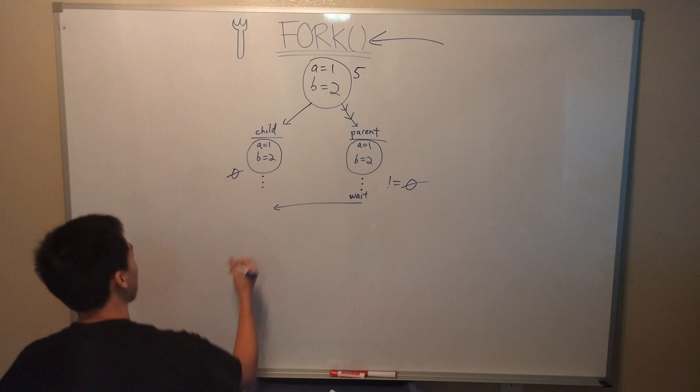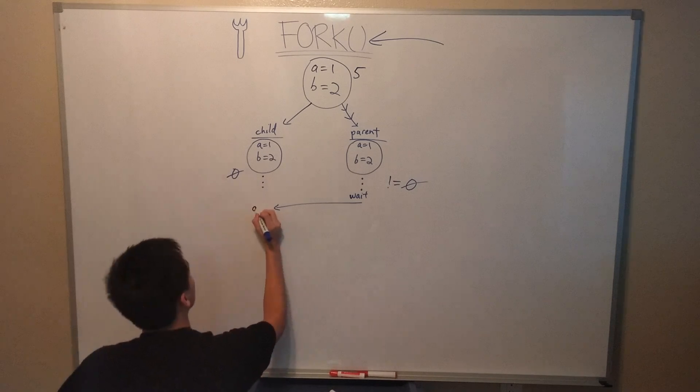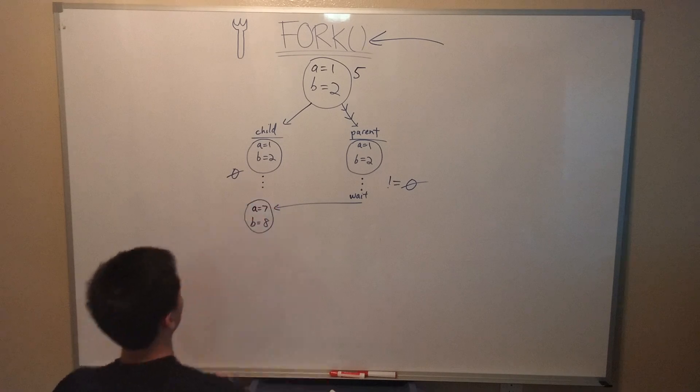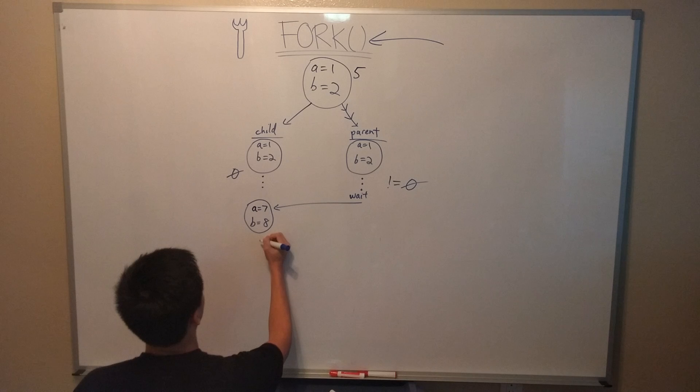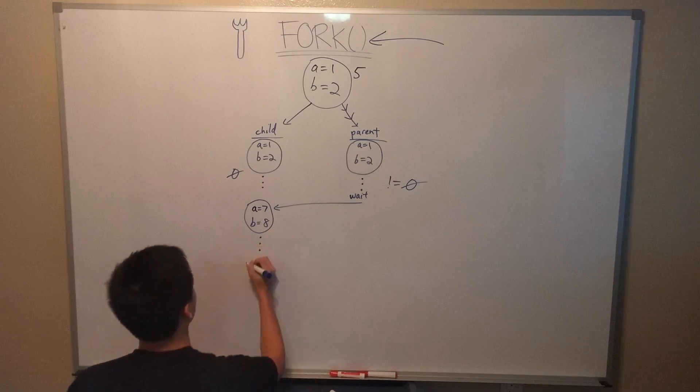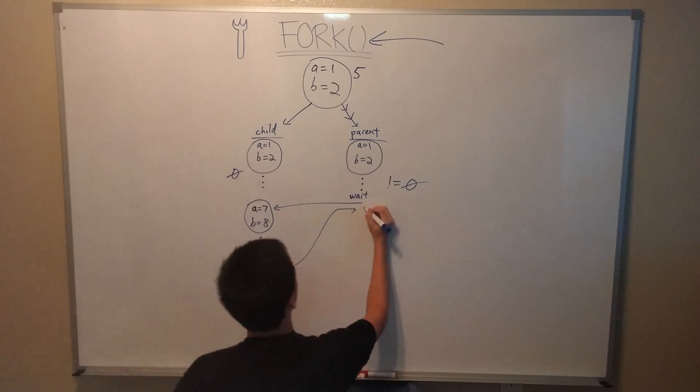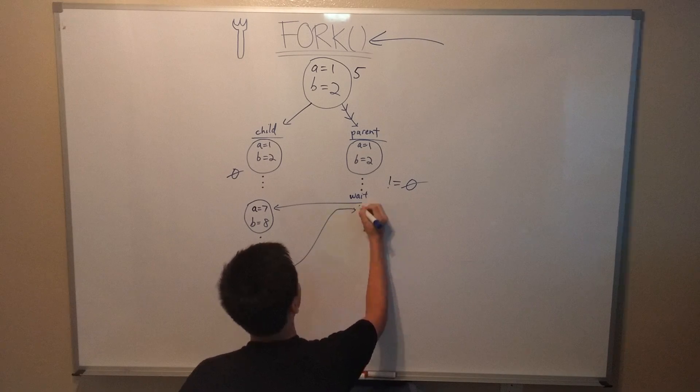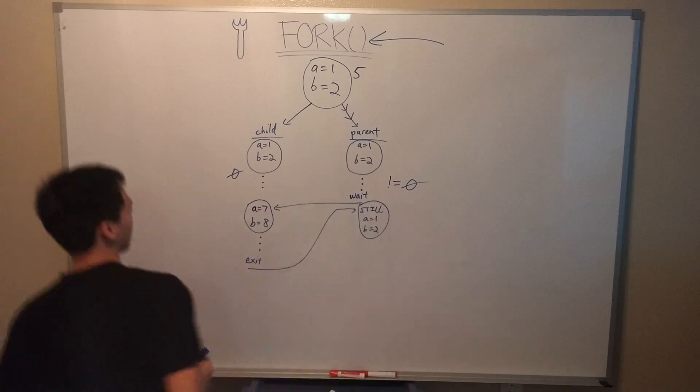In our example, if we wanted to change our a and b to a is equal to 7 and b is equal to 8 temporarily, we would only do the changes to the child. After the variables are changed and used for whatever reason, we exit the child, resuming in the parent after the wait, where it is as if our variables were never changed at all. What happens in the child is only temporary and local to the child. Once we exit, those changes are gone.